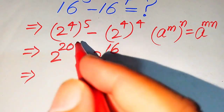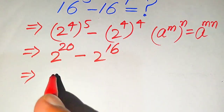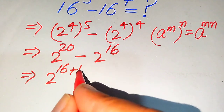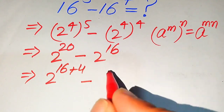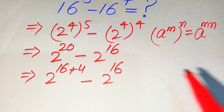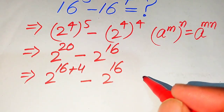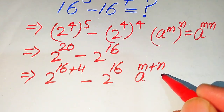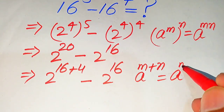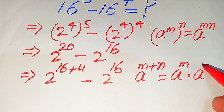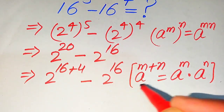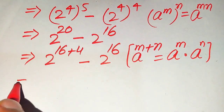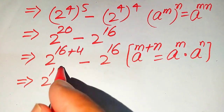In the next step, we focus on the exponent 20. We write 2^20 as 2 to the power of 16 plus 4, minus 2^16. We use the exponent law: a to the power of m plus n equals a to the power of m multiplied by a to the power of n.